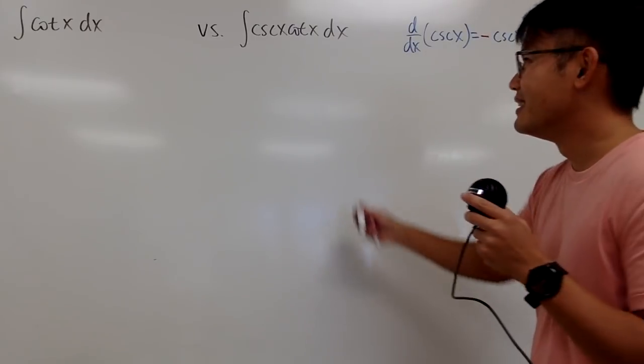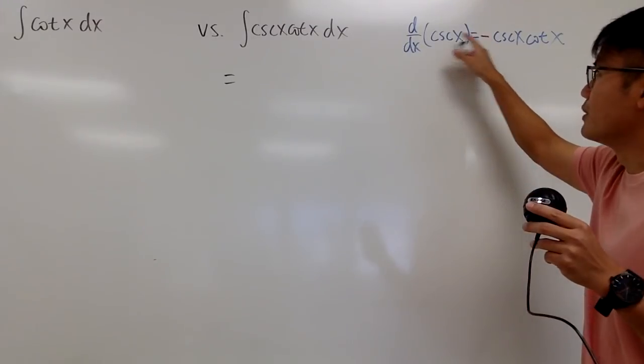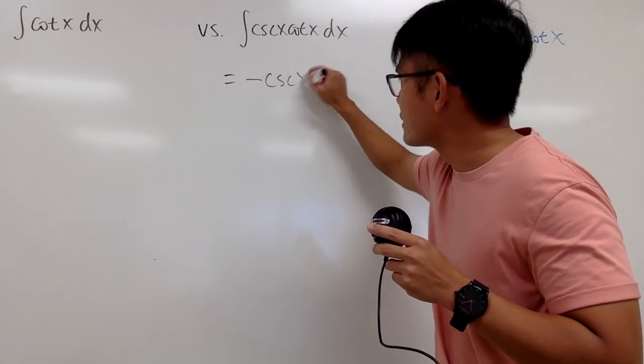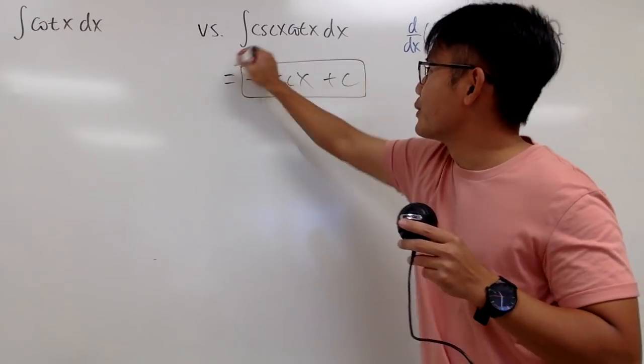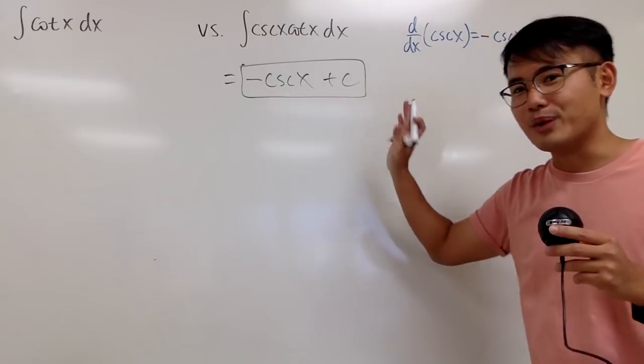So in other words, this right here is just going to be—you bring the negative two right here—so you get negative cosecant x, and you're done, plus c. So the integral of cosecant x times cotangent x dx is negative cosecant x plus c, and we're done.